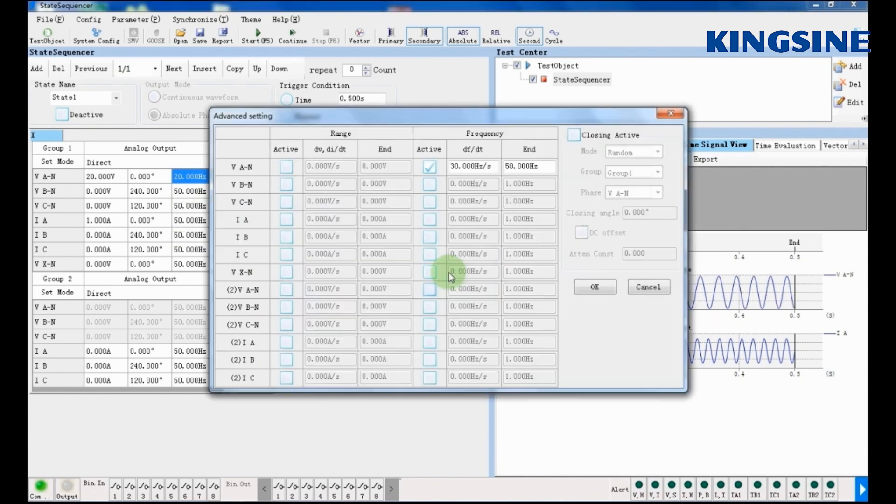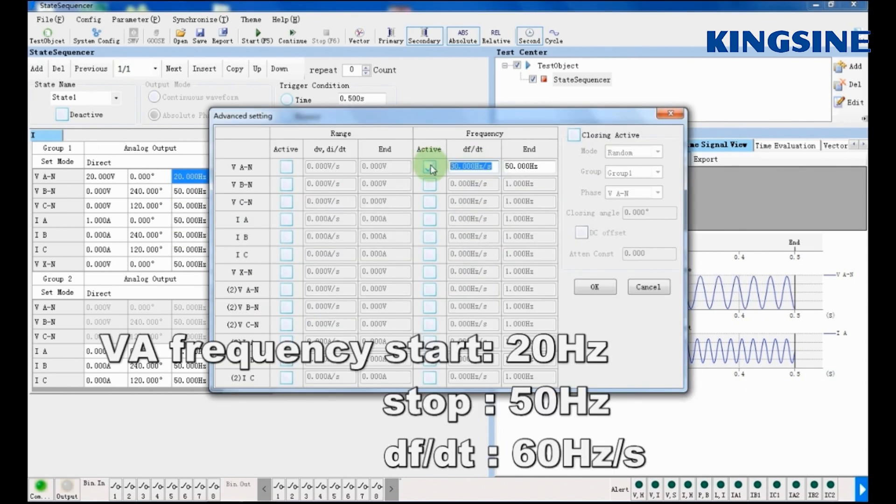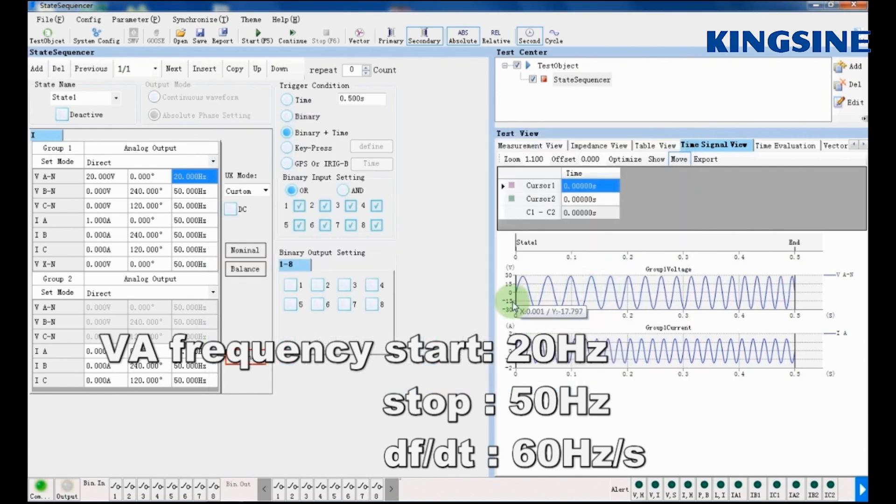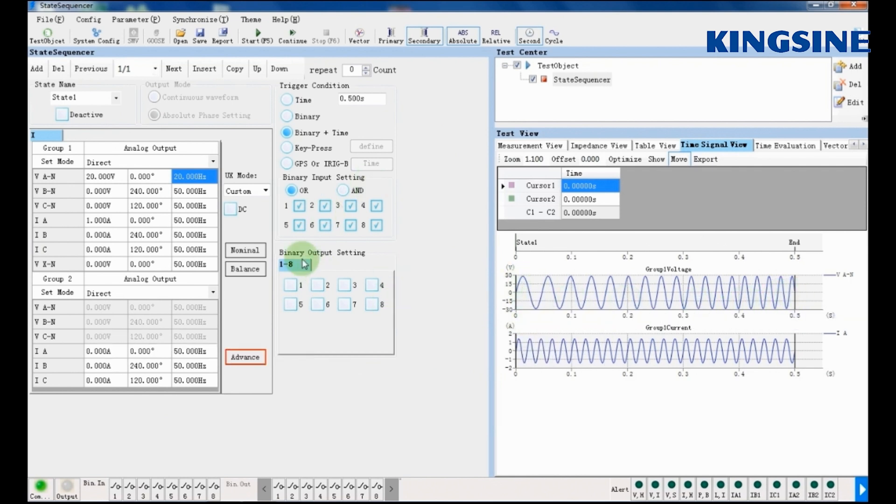Now, in advanced view, we are entering settings to increase a 20Hz signal with DF by DT of 16Hz per second. We have set time at 0.5 seconds.